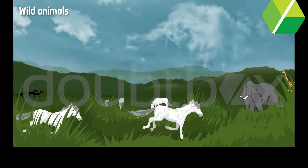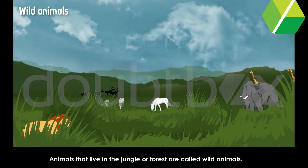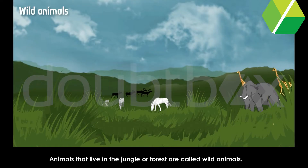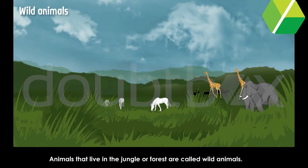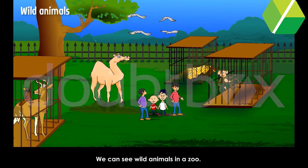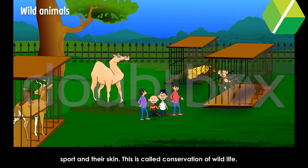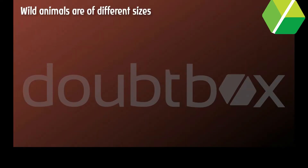Wild Animals. Animals that live in the jungle or forest are called wild animals. We can see wild animals in a zoo. We must try to save wild animals and not kill them for fun, sport, or their skin. This is called conservation of wildlife. Wild animals are of different sizes.